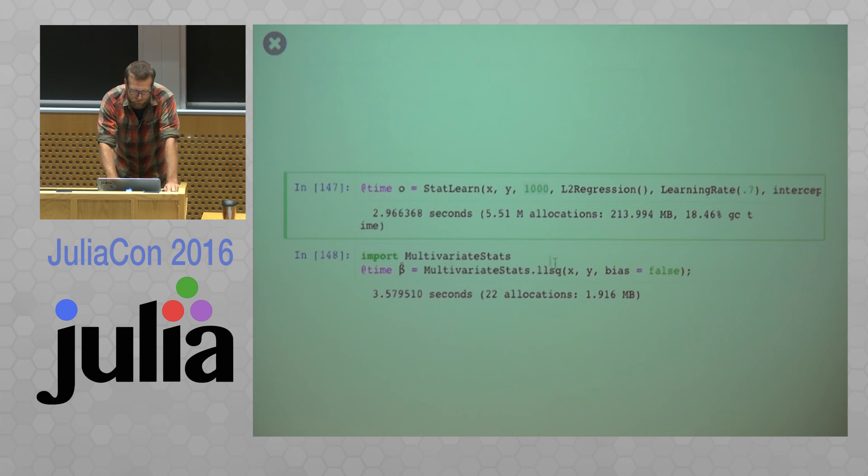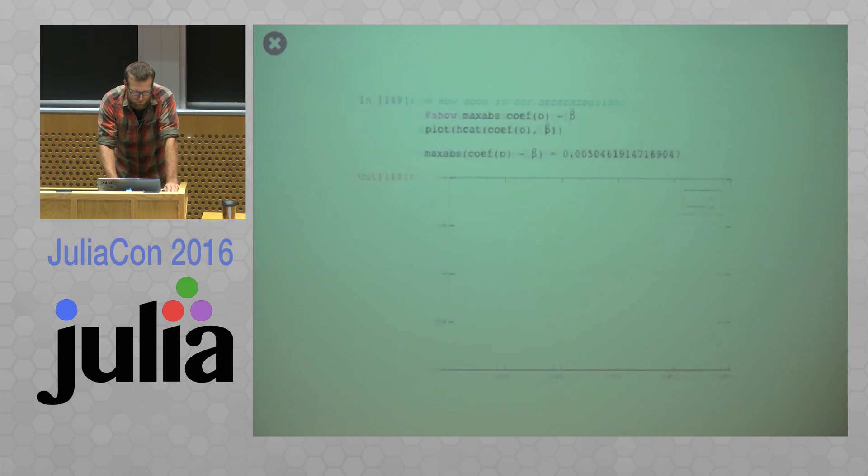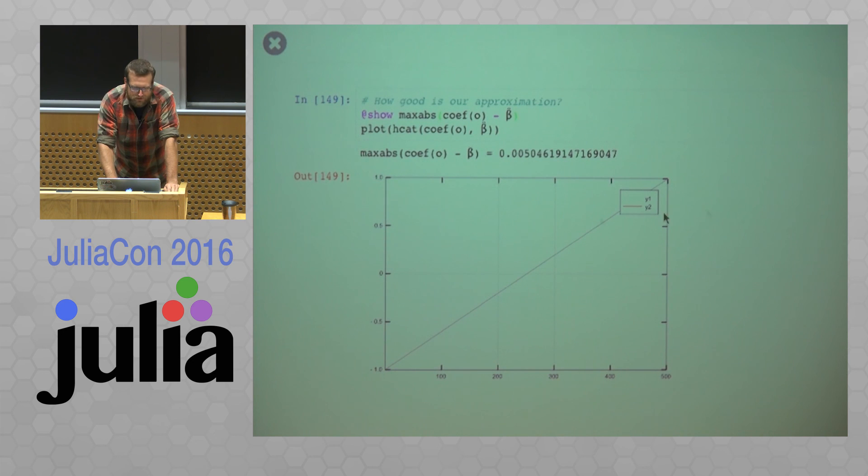Now these timings only really matter if my model is accurate. So if we look at these things, so the max absolute difference between this online version and this offline version is 0.005. And so if you plot these two coefficients together, well, you can't see any difference because they're arbitrarily close.